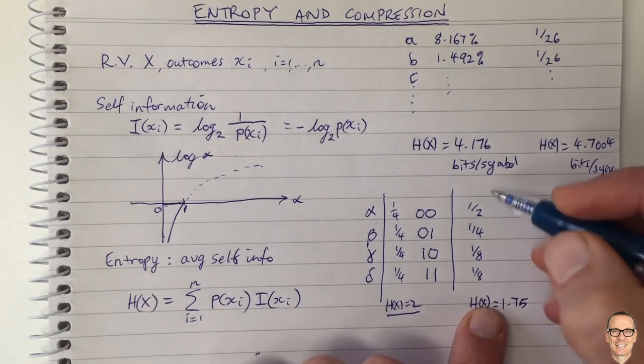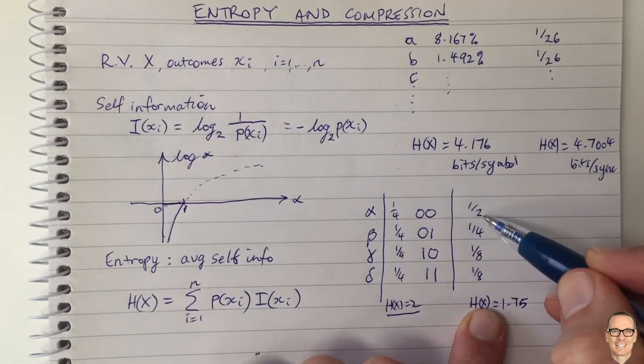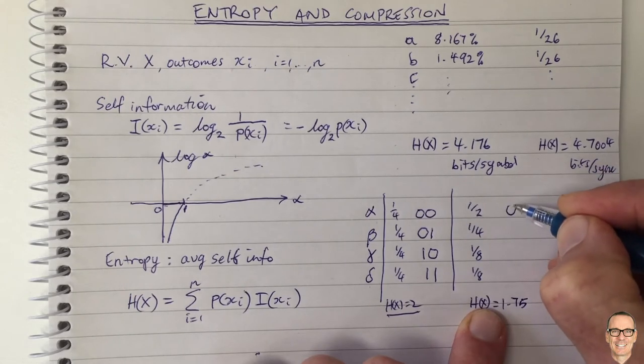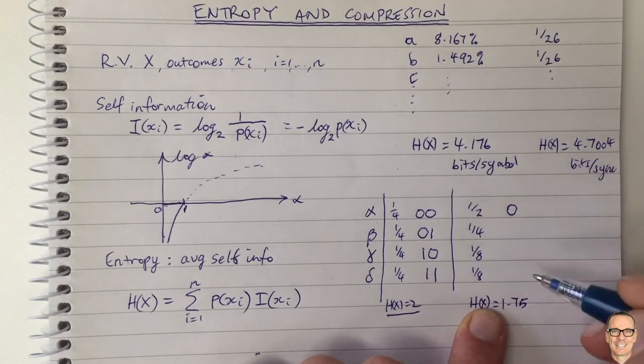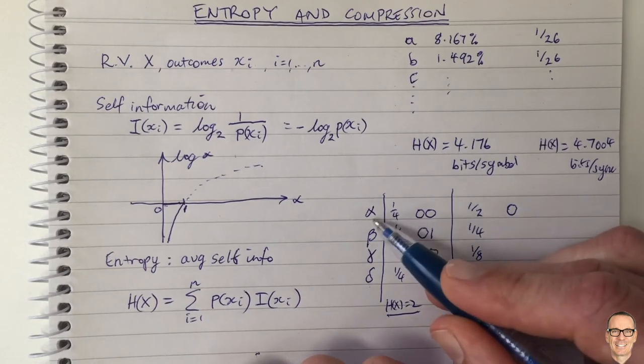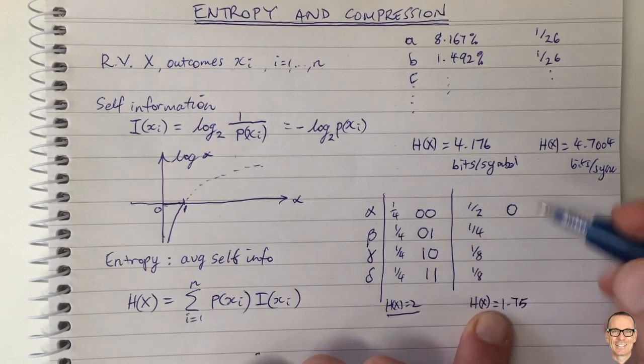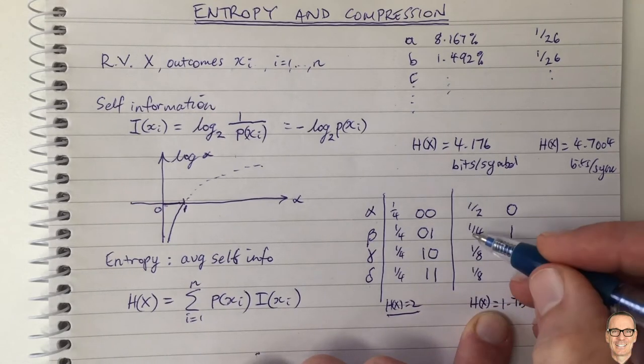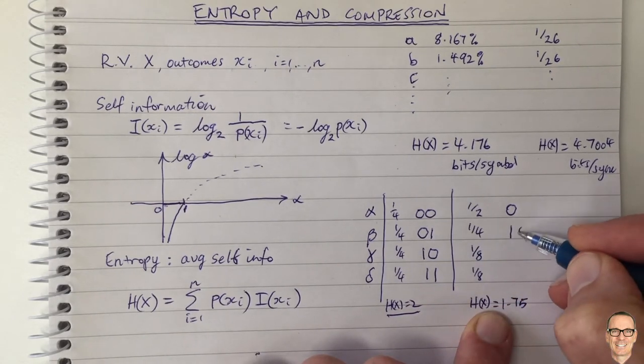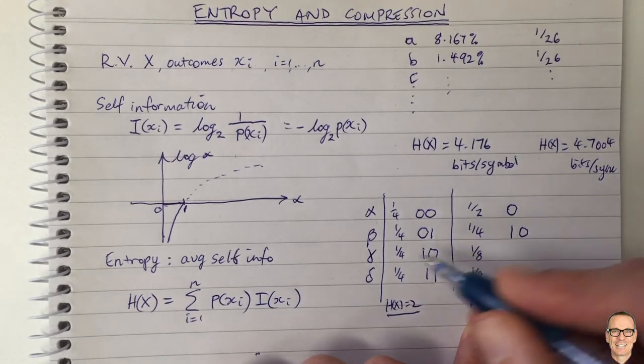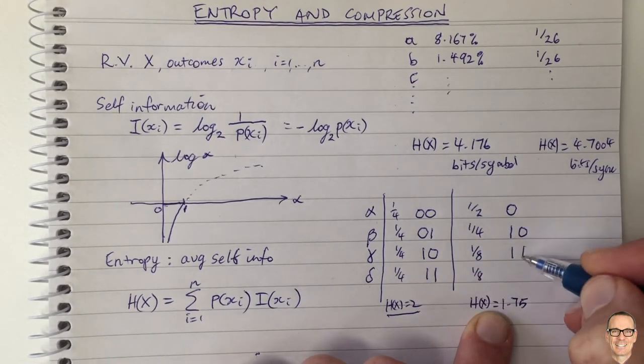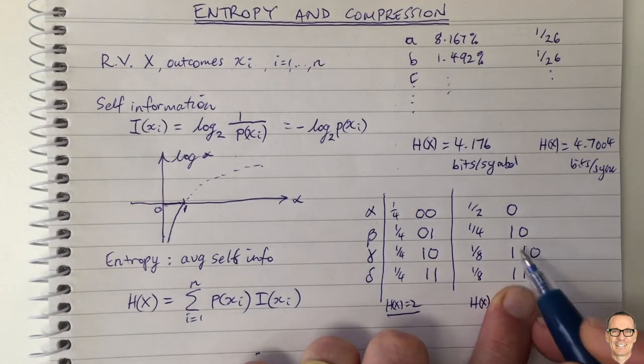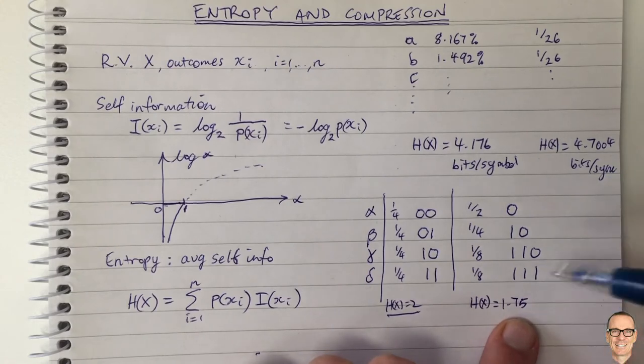So this one and the intuition is alpha happens half the time. There's a lot of times alpha happens so I'm going to give it a short code in my code book. I'm only going to give it one bit. So every time I send a zero it represents an alpha. So for beta I can't use a zero at the start so I'm going to have to use a one and it happens a quarter of the time so I'm going to give it something that, a code word that lasts for two bits, and these ones I'm going to give them code words that last for three bits. So these are unique code words and I can uniquely decode this.